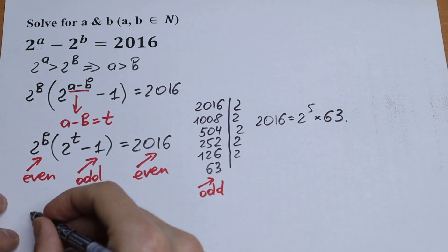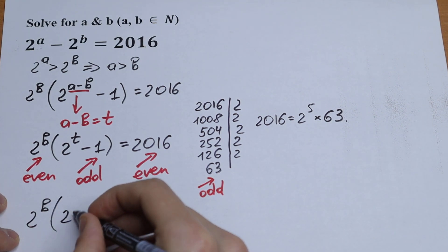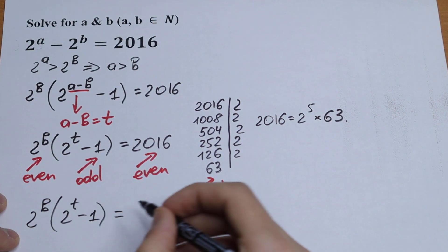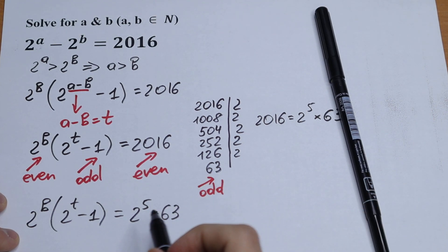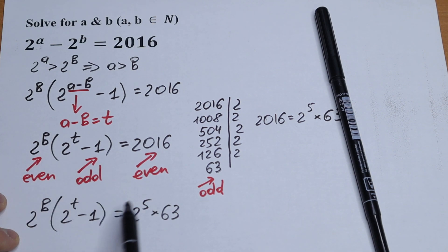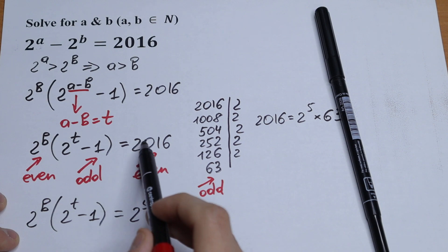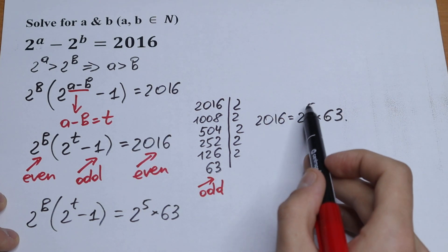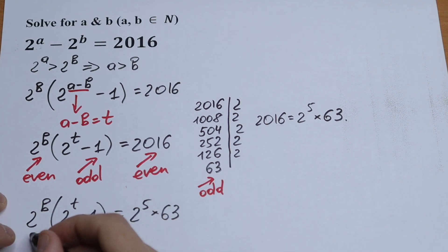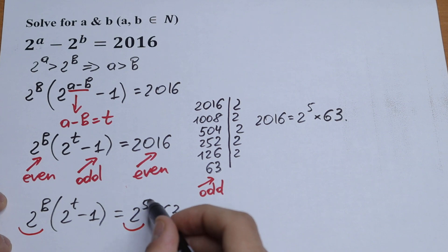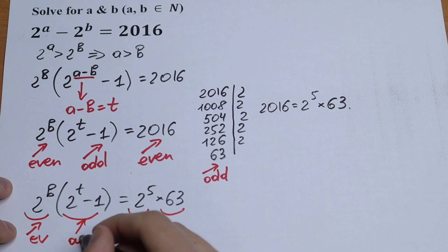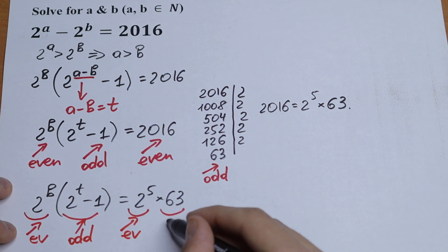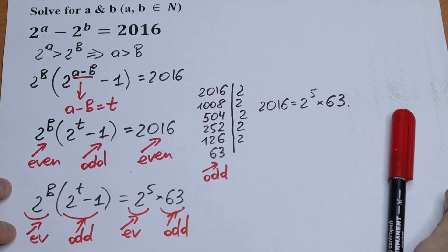So we have 2 to the power b times (2 to the power t minus 1) equal to 2 to the fifth power times 63. We have an even number times an odd number on both sides, which is exactly what we need: 2 to the power b is our even part, and (2 to the power t minus 1) is our odd part.